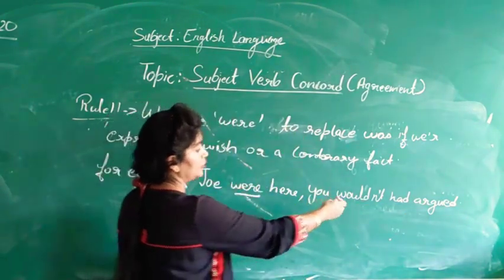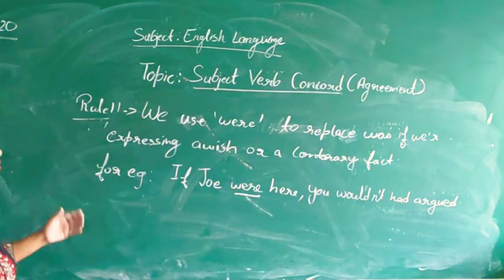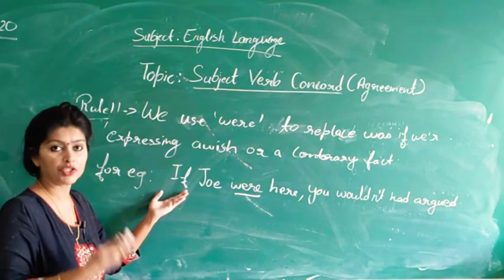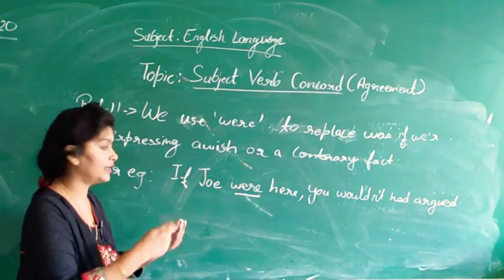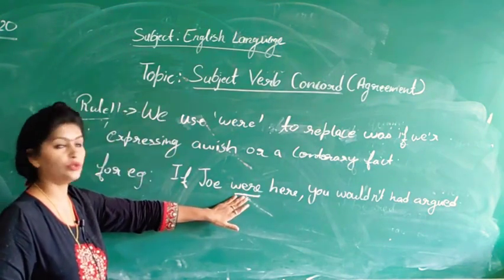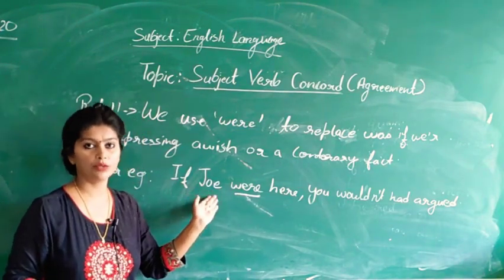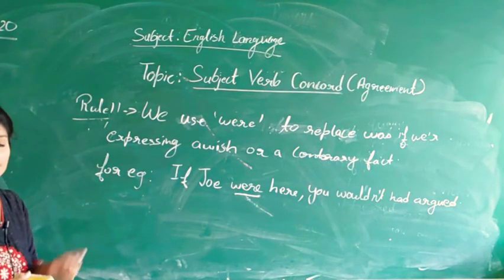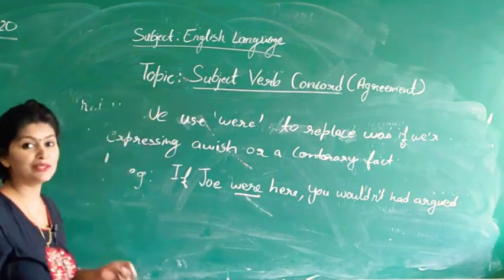The second part of the sentence — 'you wouldn't have argued' — satisfies the contrary fact condition. If we are expressing a wish or a contrary fact, we use 'were' even with a singular subject. Using 'was' in such a case is incorrect. This is a rare case, but it is a vital rule you must keep in mind.